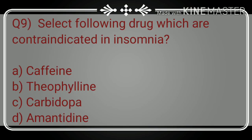Question number nine: select the drug which is contraindicated in insomnia. In insomnia, the patient is unable to produce natural sleep. The options are: A) caffeine, B) theophylline, C) carbidopa, and D) amantadine. The correct answer is both option A and B — caffeine and theophylline — as both are CNS stimulants. You may choose either one. Because they are CNS stimulants, they are contraindicated in insomnia.